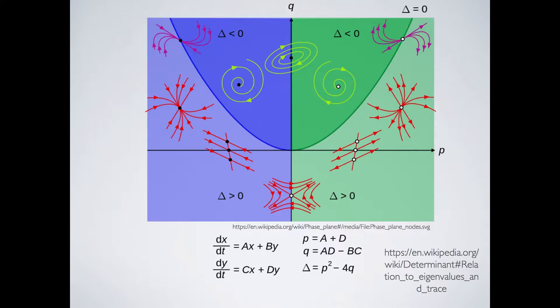When delta crosses zero the characteristic equation acquires imaginary roots. When p, the trace, is positive — meaning both eigenvalues are positive — you have expanding flows, whereas if p is negative you have contracting flows. That's for linear systems. For nonlinear systems the picture is a little more complicated, but it's based on combinations of these linear characteristics of the planar flows.